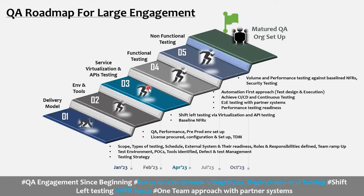Once Steps 1 and 2 are done, you move to Step 3 — actual testing begins. An important principle for large programs is that you don't need to wait for the full application to be developed and deployed before starting testing. For example, before the front-end is available for functional testing, databases, APIs, and back-end services may already be ready. The approach should be: how do I shift left and start testing early?